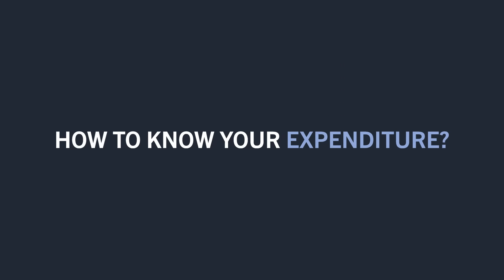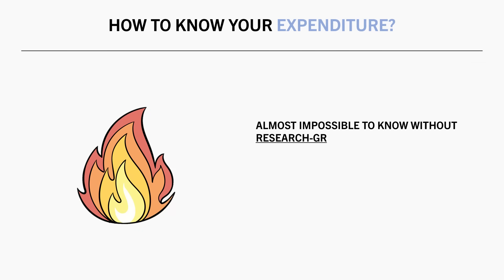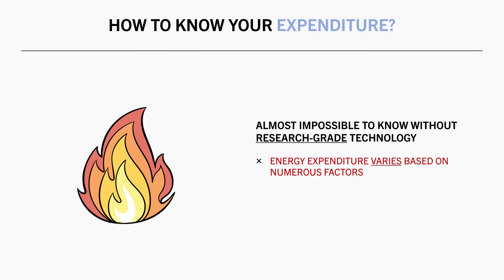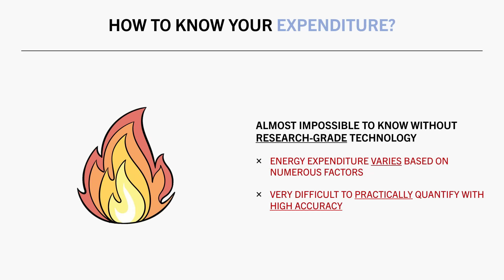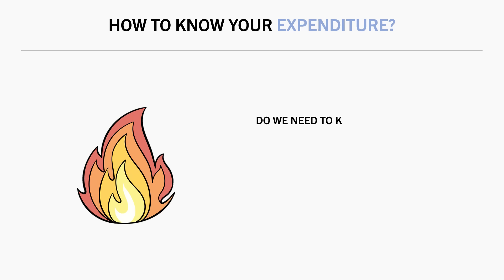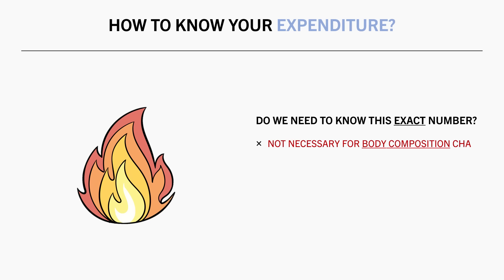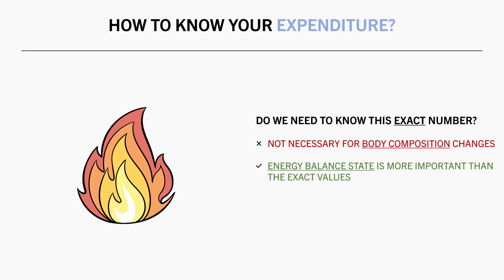So taking all this into consideration, how can we really know how many calories we burn per day? It will be almost impossible to know the exact value without access to research-grade technology. And even if we knew our exact expenditure on one day, it could very well change from day to day based on physical activity levels, diet, weight gain or loss, and changes in body composition. But do we really need to know this exact value? Not really — for the purposes of body composition changes, we are really just trying to achieve an energy balance state, and it doesn't matter what the specific numbers are.